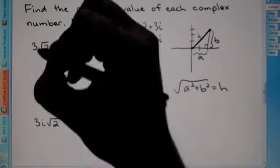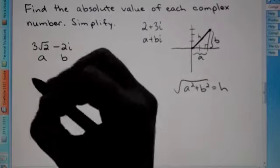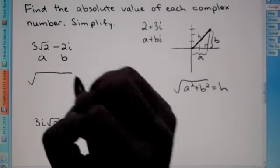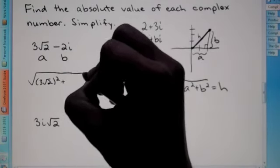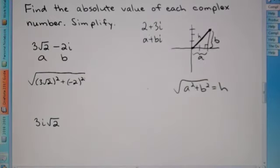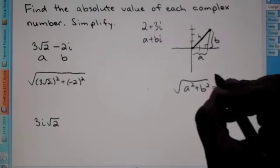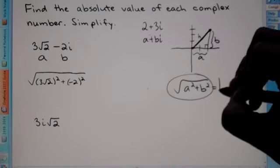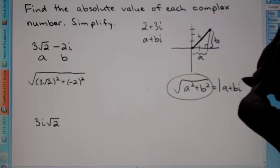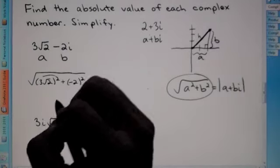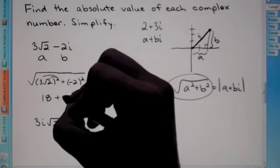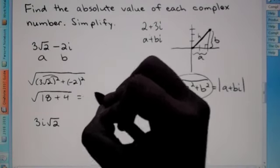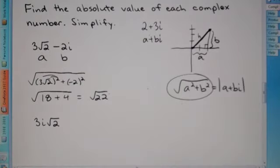To apply this formula, a is in the first position and b is in the second. Setting it up under the root: we have 3 root 2 squared plus negative 2 squared. 3 squared is 9, root 2 squared is 2, so 9 times 2 is 18. Negative 2 squared is 4. So we get the square root of 22, which you cannot break down — there are no perfect square factors of 22. That would be your absolute value.